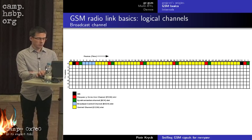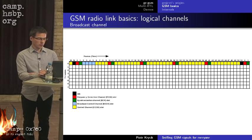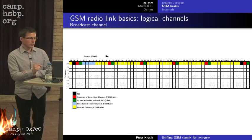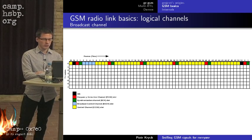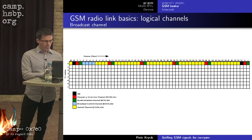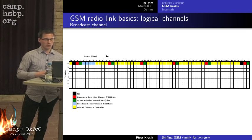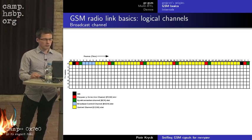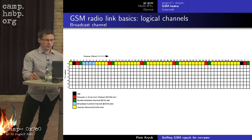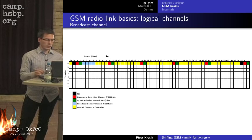If you put subsequent time slots in columns, physical channels are in rows. The traffic channel / slow associated control channel combination repeats every 26 frames, with traffic channels carrying users' voice and the slow associated control channel carrying call-related control like power control or timing advance. The broadcast channel group — always in the first time slot — consists of frequency correction bursts, synchronization bursts, broadcast control channel carrying base station configuration, and common control channels for paging and assigning channels.